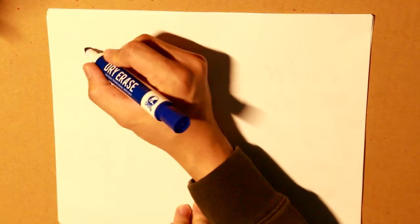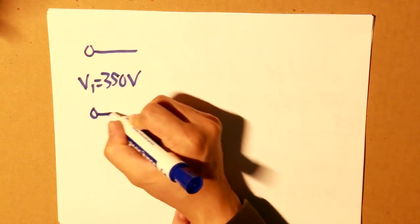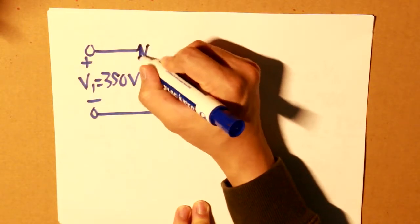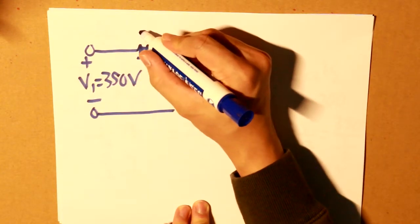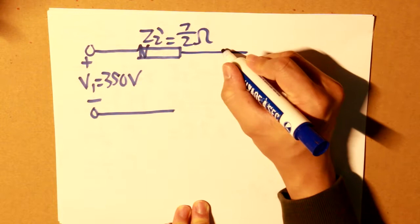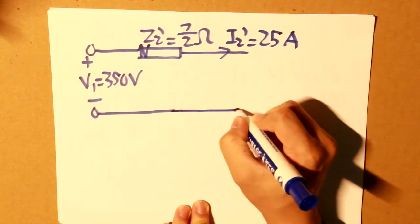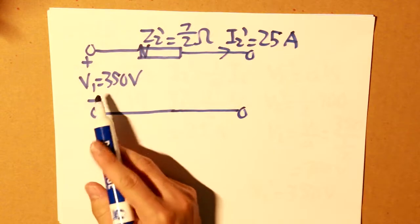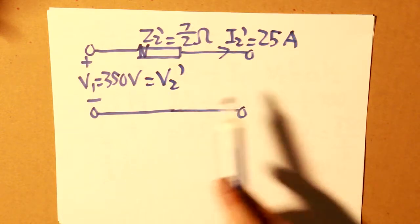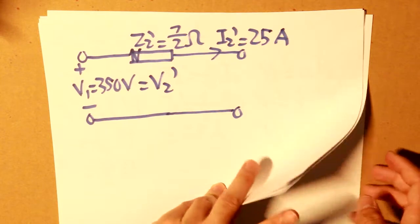So what we get is here: v1 is equal to 350 volts, our z2 here is equal to 7 over 2 ohms, our current that is flowing through here is 25, and there we have it. V1 is also equal to v2 prime. So that is our new transformer circuit.